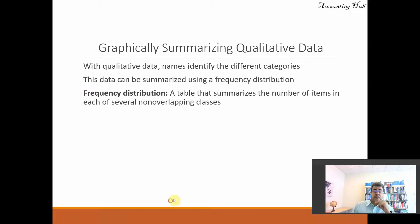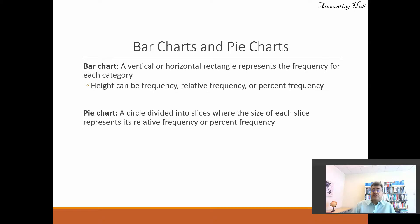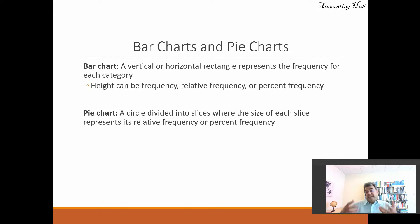We have four chart types: column, bar, pie, and Pareto. Let's go through the first three. A bar chart is vertical or horizontal — rectangles that represent the frequency for each category. The height can be frequency, relative frequency, or percent frequency. A pie chart — in Brazil, my home country, we call it a pizza chart — is a circle divided into slices, where the size of each slice represents its relative frequency or percent frequency.